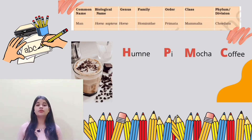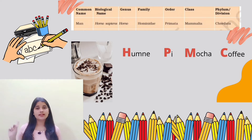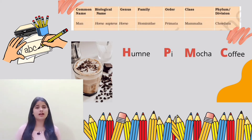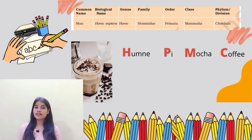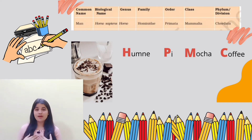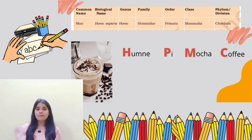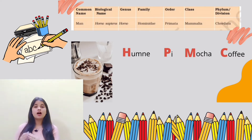So without any further ado, let's jump on to the tricks. The very first species given in this table is Homo sapiens, that is humans. As you see in this table, there is no trick provided for the first two categories — species and genus — because it is nothing else but the scientific name itself. The trick to learn the higher categories is 'Humne pi mocha coffee.' Mocha is a type of coffee, so mocha should already remind you of humans. Here, 'Humne' represents Family Hominidae, 'P' represents Order Primates, 'Mocha' goes for Class Mammalia, and 'Coffee' represents Phylum Chordata.